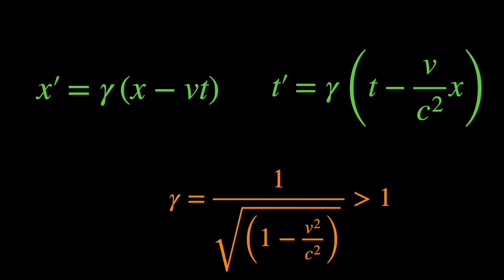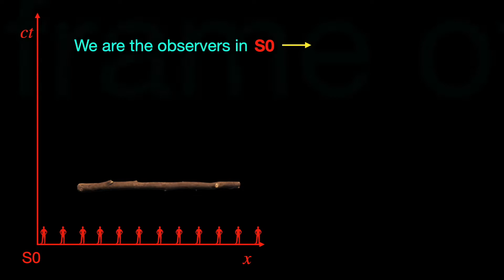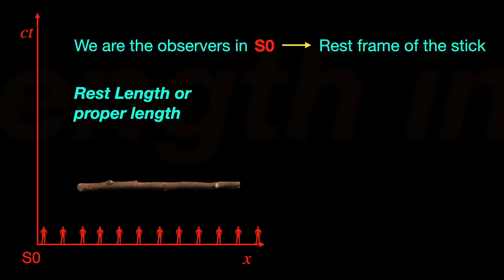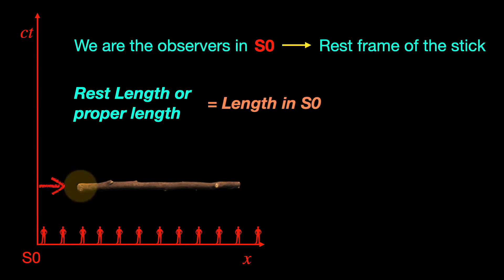Okay, now we are ready to get to the length contraction effect. First things first, the rest frame length of a stick is measured by ourselves. We are the observers in a frame S0 where the stick appears to be static. The rest length or proper length of the stick is the length measured by ourselves, the S0 observers. This is just the difference of the space coordinates of the two endpoints of the stick, a simple x2 minus x1, let's say L0.